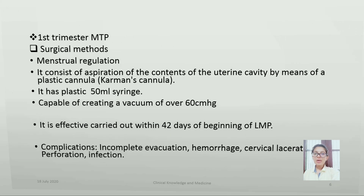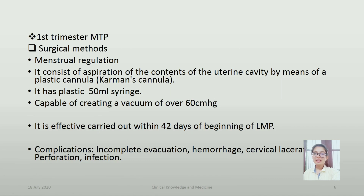First trimester MTP — surgical methods. Menstrual regulation consists of aspiration of the contents of the uterine cavity by means of a plastic cannula, i.e. Karman's cannula — a plastic 50 ml syringe capable of creating a vacuum of over 60 cm Hg pressure. It is effectively carried out within 42 days of the beginning of LMP, i.e. last menstrual period.